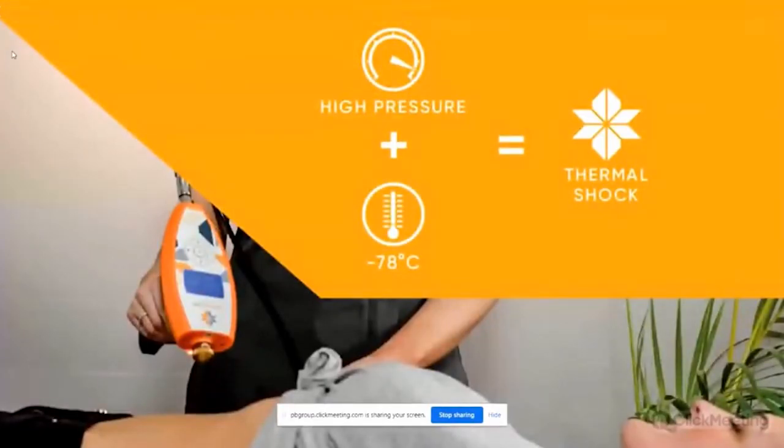So cryotherapy is all well and good, but what are we trying to do? We're applying, in the case of the Casen, carbon dioxide gas which is hitting the skin at minus 78 Celsius under pressure out of a cylinder, and it causes thermal shock. That's the body's natural reaction to being cooled down rapidly. We're trying to elicit lots of natural biological responses to the cold. The first of which is the body's ability to close down some of the blood vessels and prevent the core body temperature being reduced too much.